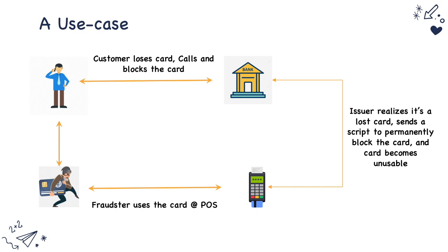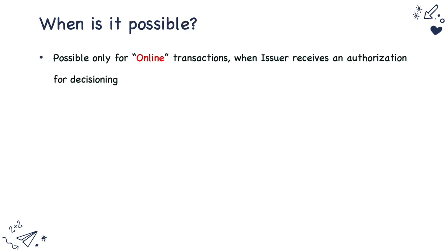In the case of a magnetic stripe card, this was not possible — the fraudster would have an opportunity to use the card multiple times. Whereas in case of an EMV card, the card can be permanently blocked when a fraudster tries to use it, and in subsequent use the card becomes unusable.